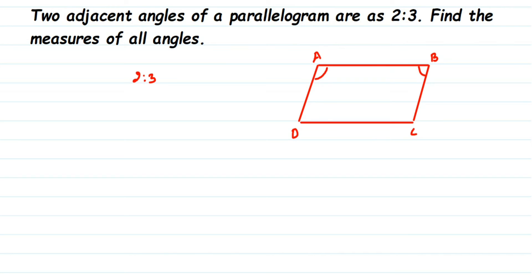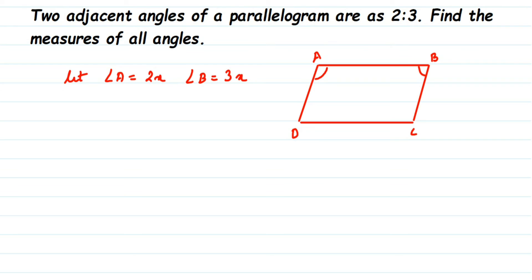We have been given the ratio, so let us take a variable. I'm just assuming angle A and angle B to be two adjacent angles and the ratio is 2 is to 3. Whenever ratios are given, we'll take a variable and write it as 2x and 3x. So let angle A be equal to 2x and angle B be equal to 3x.